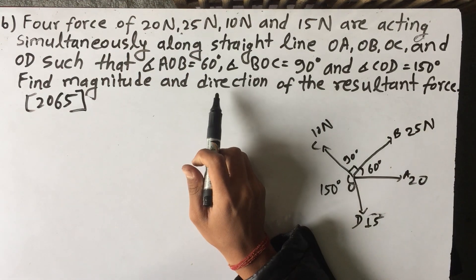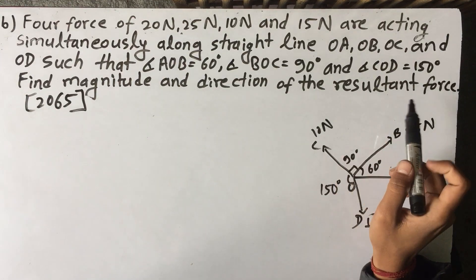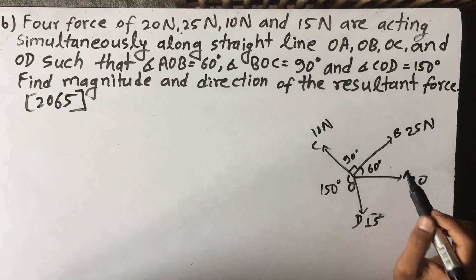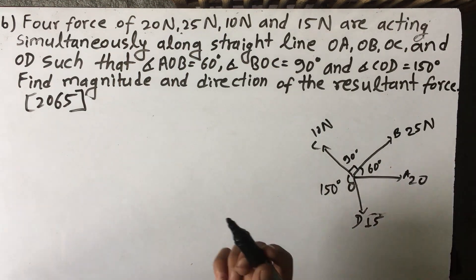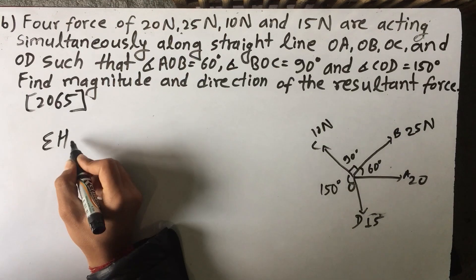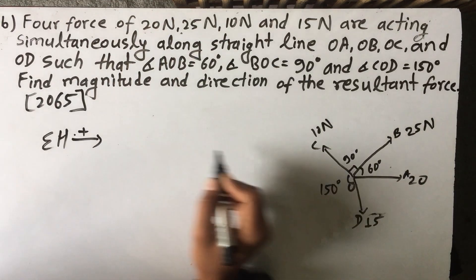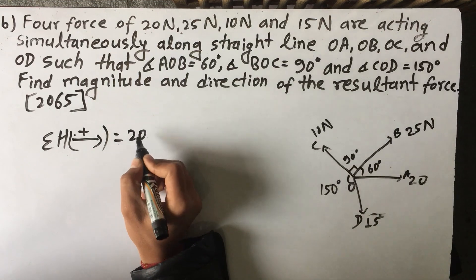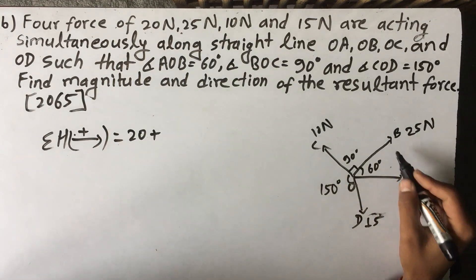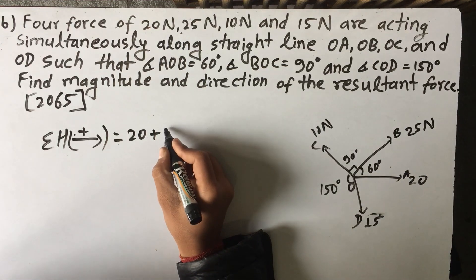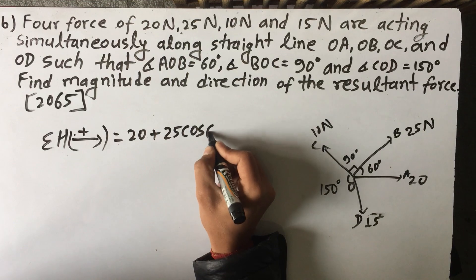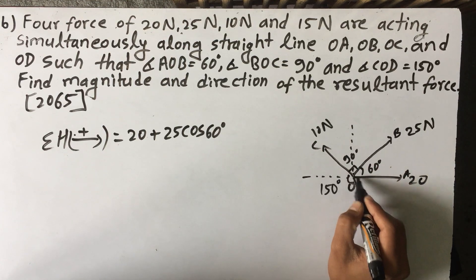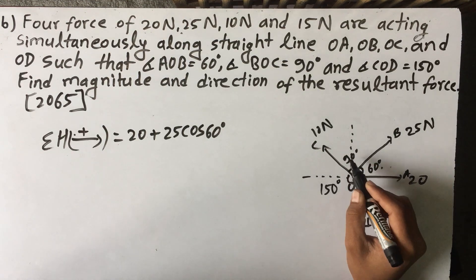The angle of 150 degrees is 50 degrees from the reference. We will make the magnitude and direction of the resultant. We will resolve all the forces into horizontal and vertical components. First we will find the horizontal components.